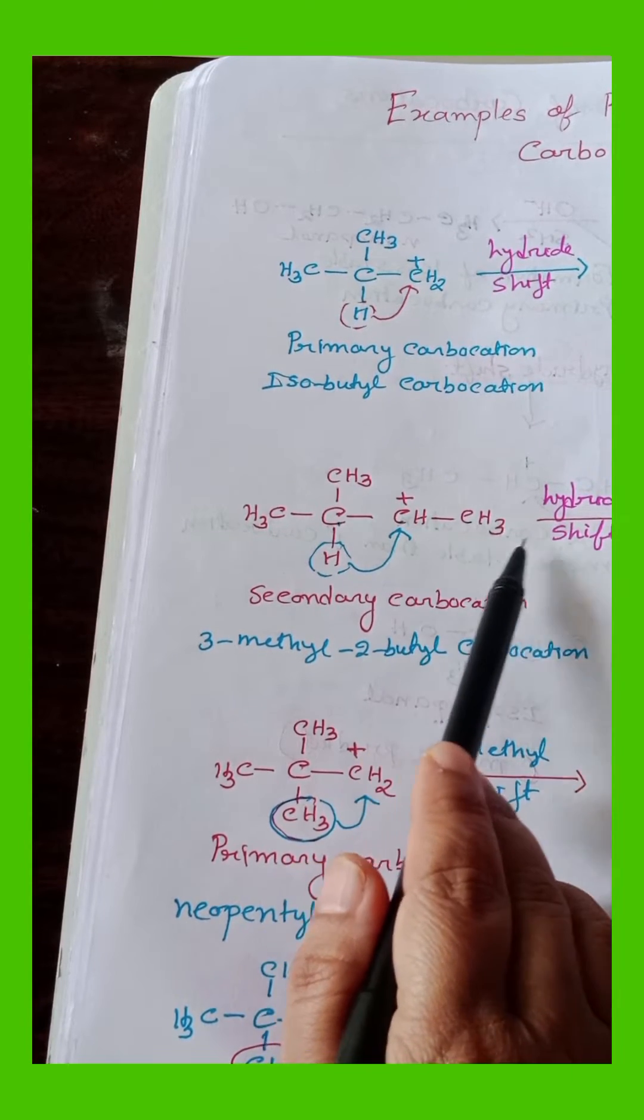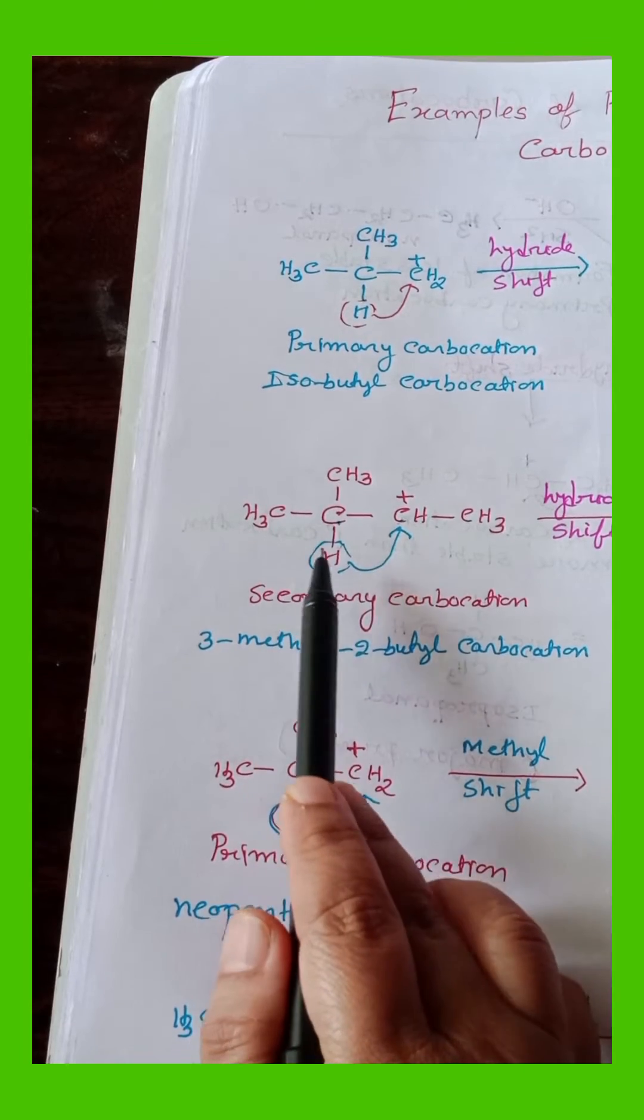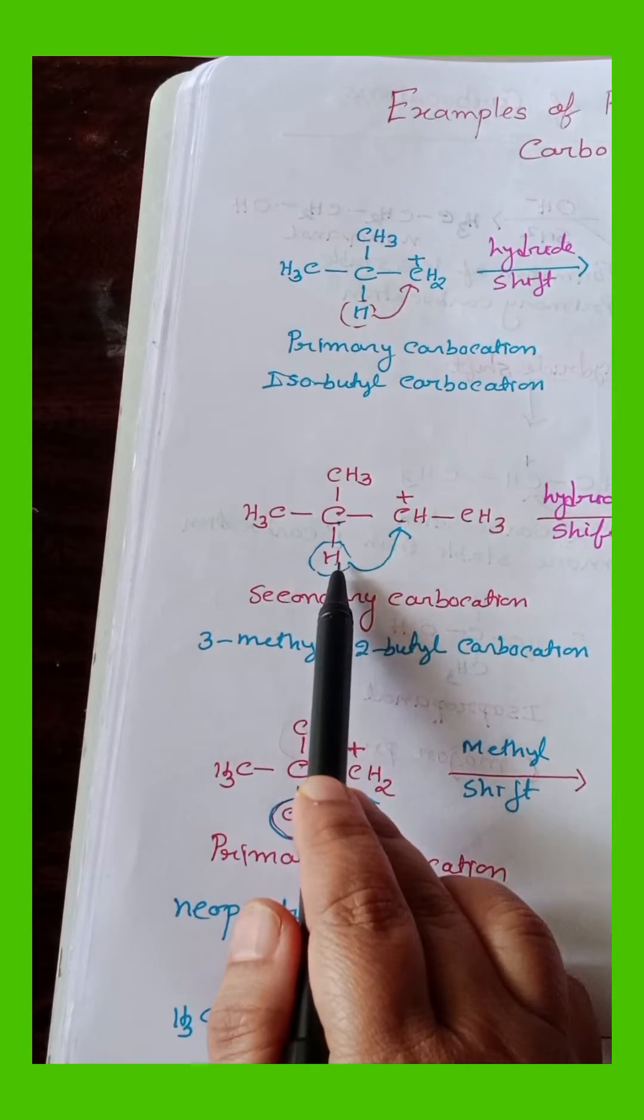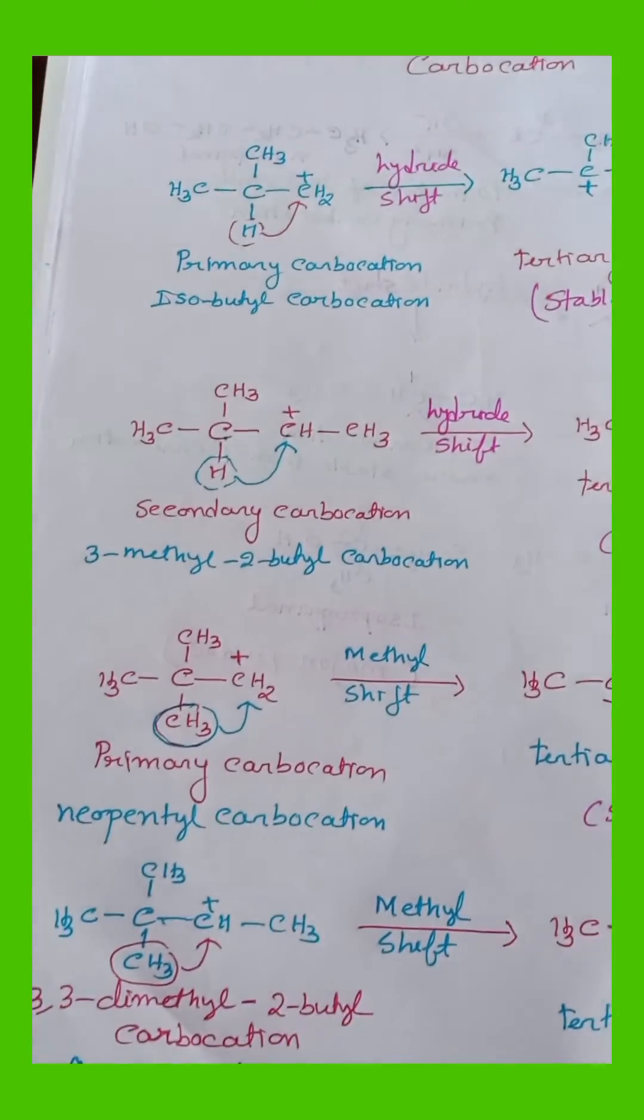So, definitely reaction will not move in this direction. Rather than the beta-hydrogen of left-hand side beta-carbon, the hydride shift takes place. We get 3-degree carbocation which is more stable than the secondary carbocation.